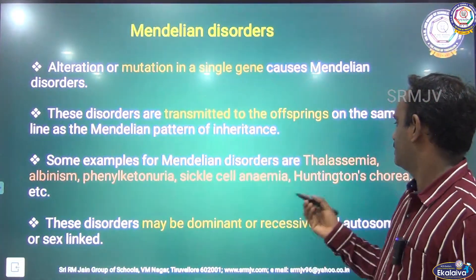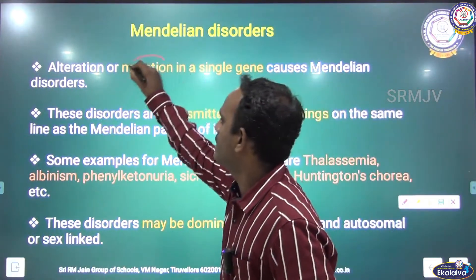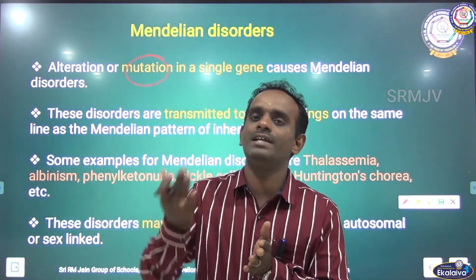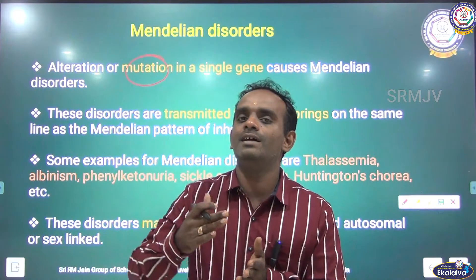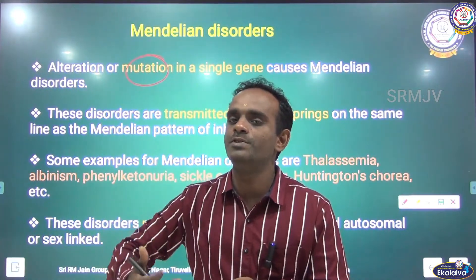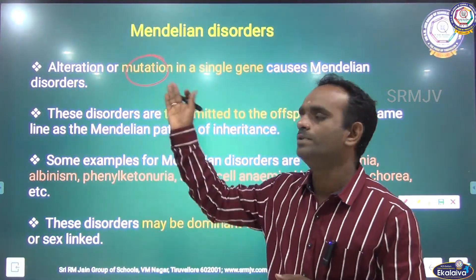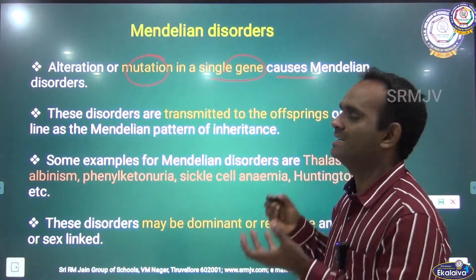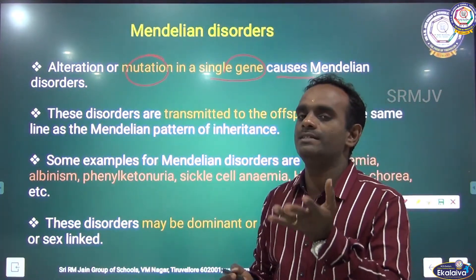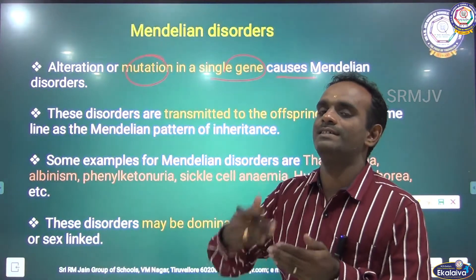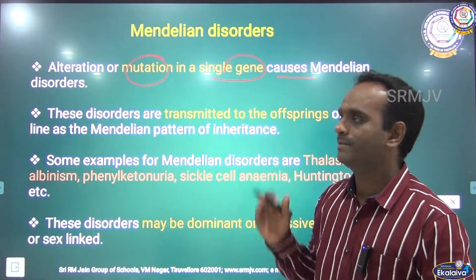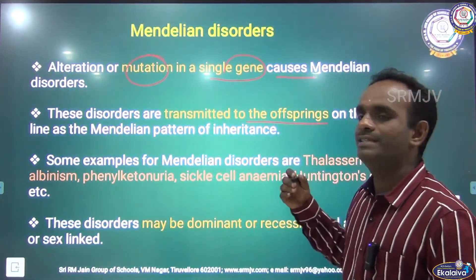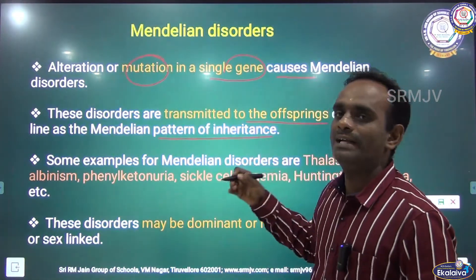Alteration or mutation — you already studied about mutation. A sudden change or sudden alteration or sudden damage that takes place in the nucleotide sequence of the individual DNA or the gene is called mutation. Alteration or mutation in a single gene causes Mendelian disorder. These disorders are transmitted to the offspring on the same line as the Mendelian pattern of inheritance.